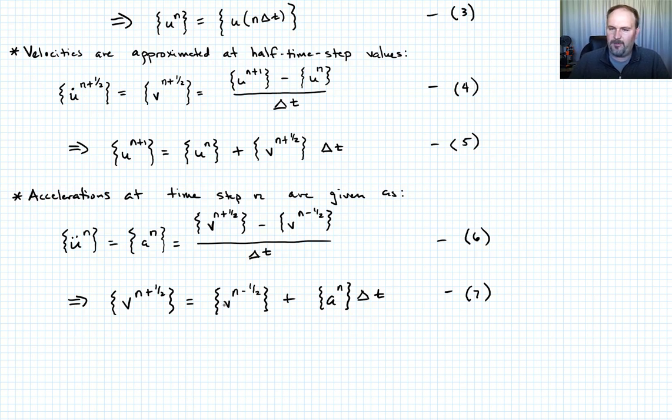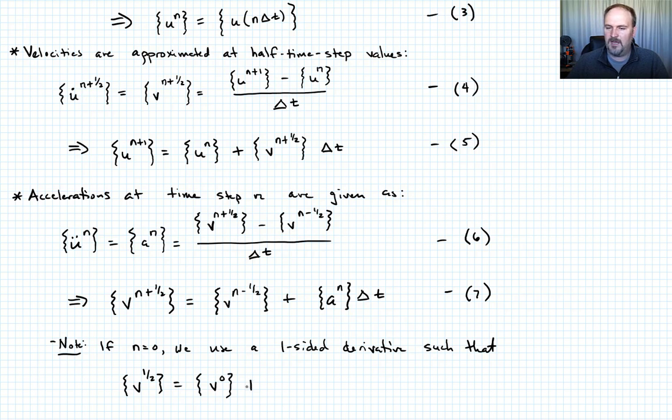Let me give you a note here. Obviously, we have a problem. What if n equals 0? Then we have v to the minus 1 half. So here's your note. If n is equal to 0, so it's our very first step, then we're going to just use a one-sided derivative. Such that we would write that this first term, v one-half, when n equals 0, is equal to v naught, that initial velocity, plus one-half a naught times delta t. And so let's call that equation 8. So this is how you get that first half velocity term.